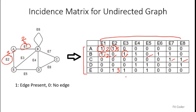One important point to notice: you can find out which edge connects which two nodes. For each column you'll find that there are exactly two entries of 1 and the rest are 0. Those two entries of 1 are the nodes connected by that particular edge. For example, E4 connects B and D, and E7 connects B and C. This is an important property of the incidence matrix.